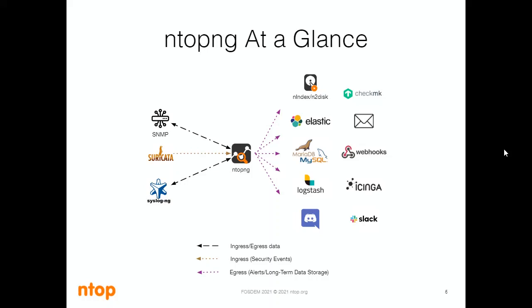ntopng doesn't stand alone — it can stand alone itself, but it can even communicate with other programs and software. For example, it can talk with Suricata, Syslog, SNMP, and get information from them. ntopng can even export that information to external services like Discord, Logstash, Telegram, and so on.